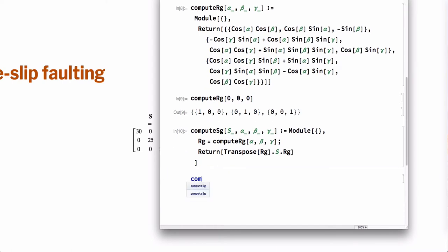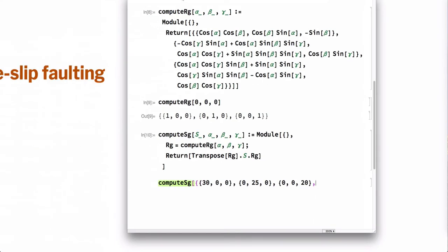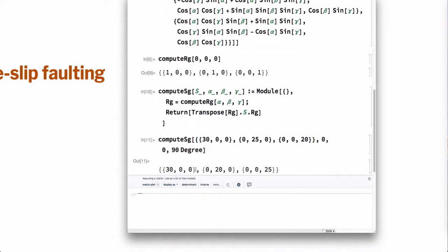So now I have another function, compute SG, and let's now test this function. For example, for this problem here, our stress field is 30, 25, 20. And the angles are 0, 0, 90. Alright, so there's the result. There's the stress in the geographic frame. This is SG.